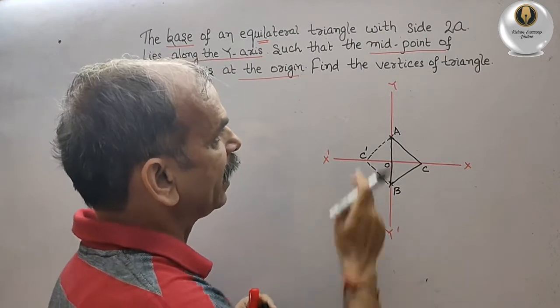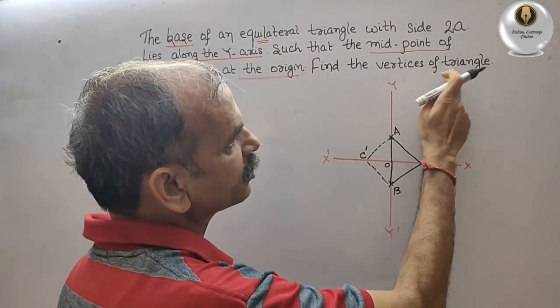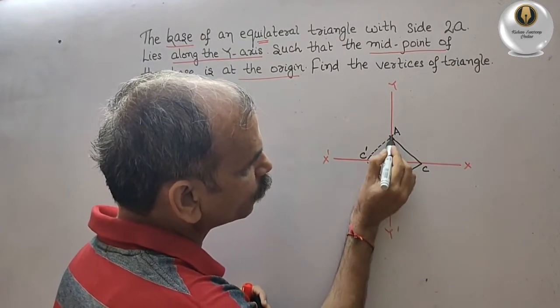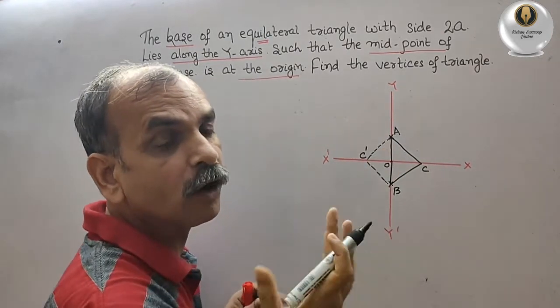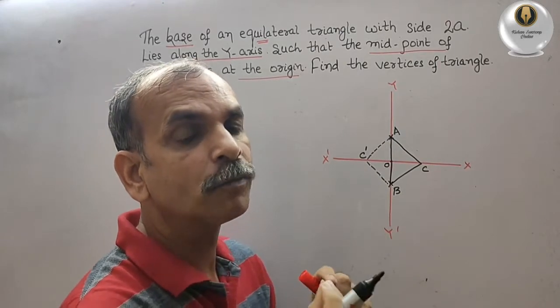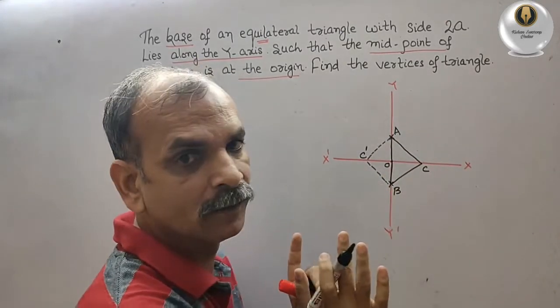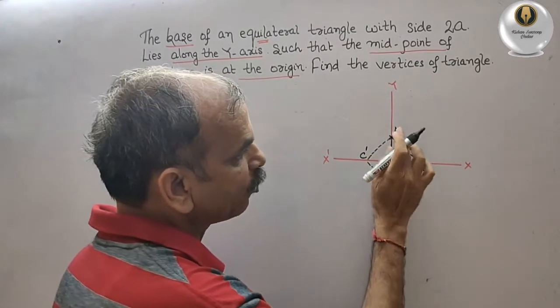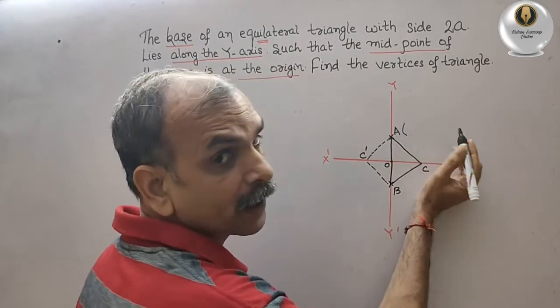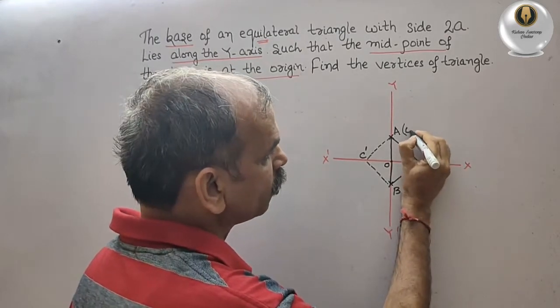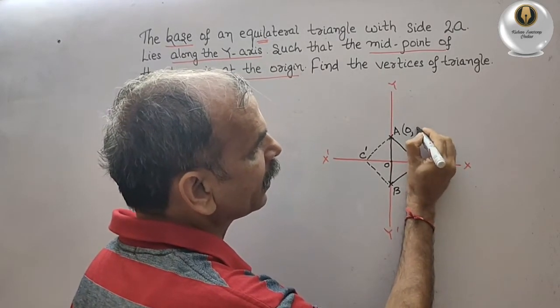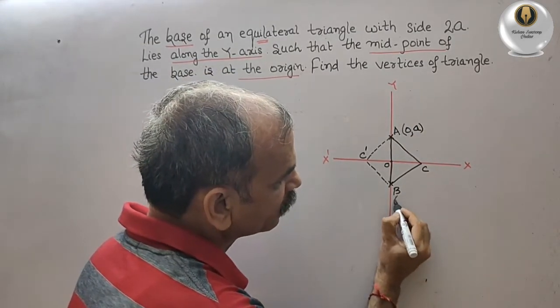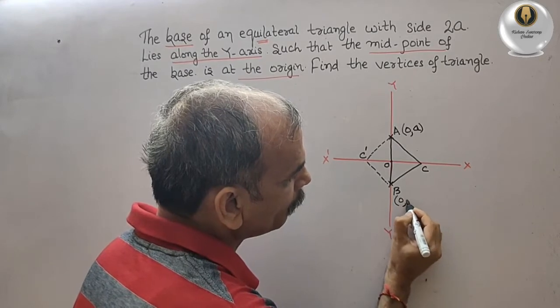So we know that this is 0, from here to A is your what, A only, small a. And total is 2a. So this is your A only. So this coordinate is 0 comma A. And this coordinate is 0 comma minus A.